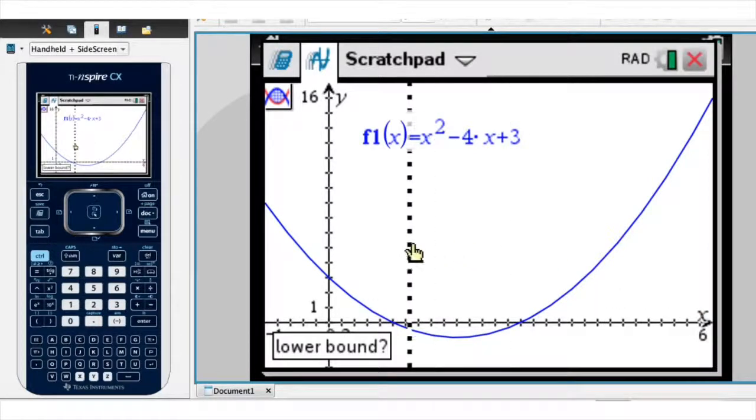Now I can see that the calculator is asking me for a lower bound. Well, remember, we're interested in the enclosed area between x equals 1 and x equals 4. So the lower bound is 1. And to tell that to the calculator, all we have to do is type 1. And we type that absolutely anywhere. Once it's typed, we click enter.